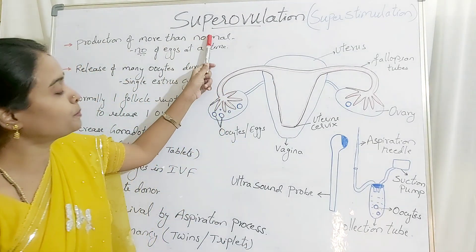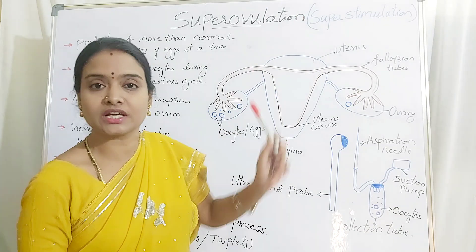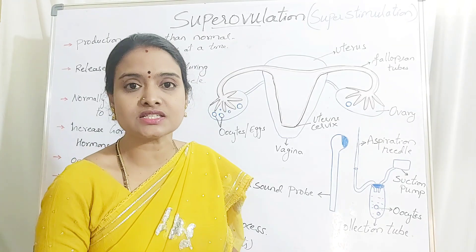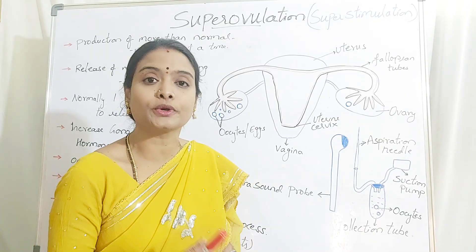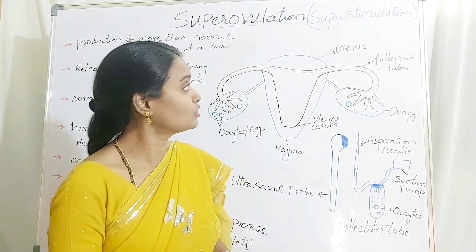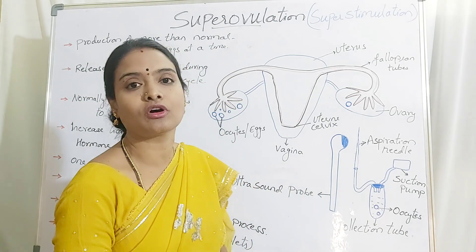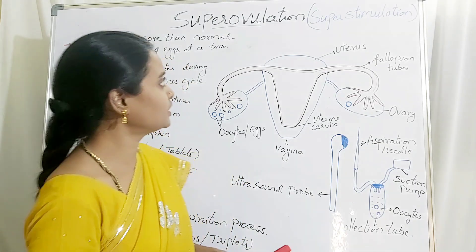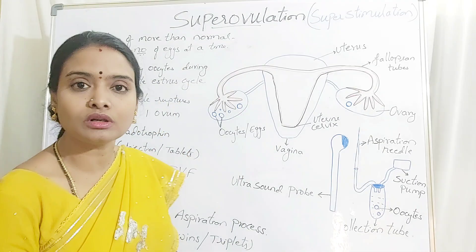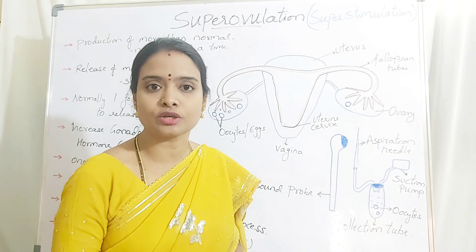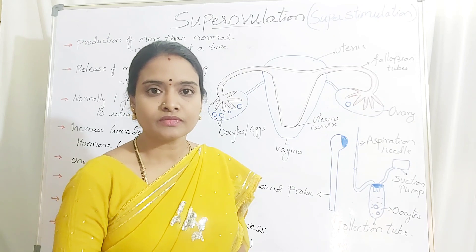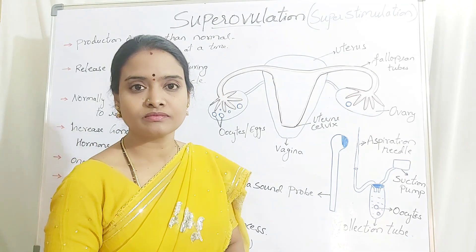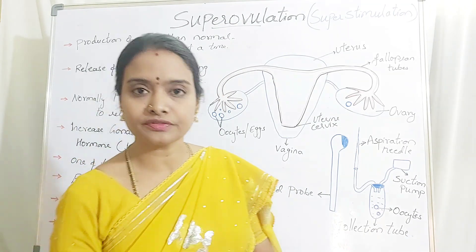So super ovulation or super stimulation is a process where you increase or allow the animal to produce more than the normal number of egg cells. It plays a very important role in the in vitro fertilization process. If you have any doubts, put them in the comments and subscribe for further videos.